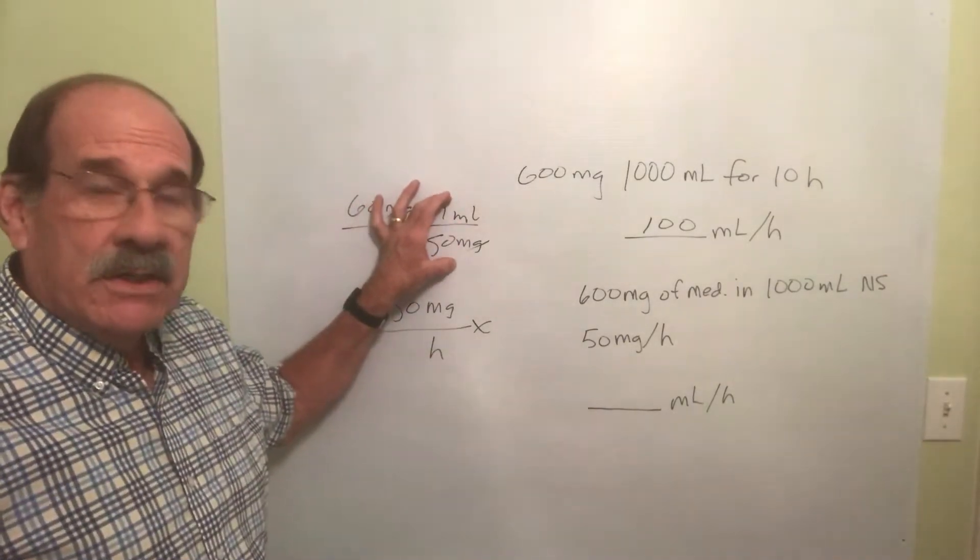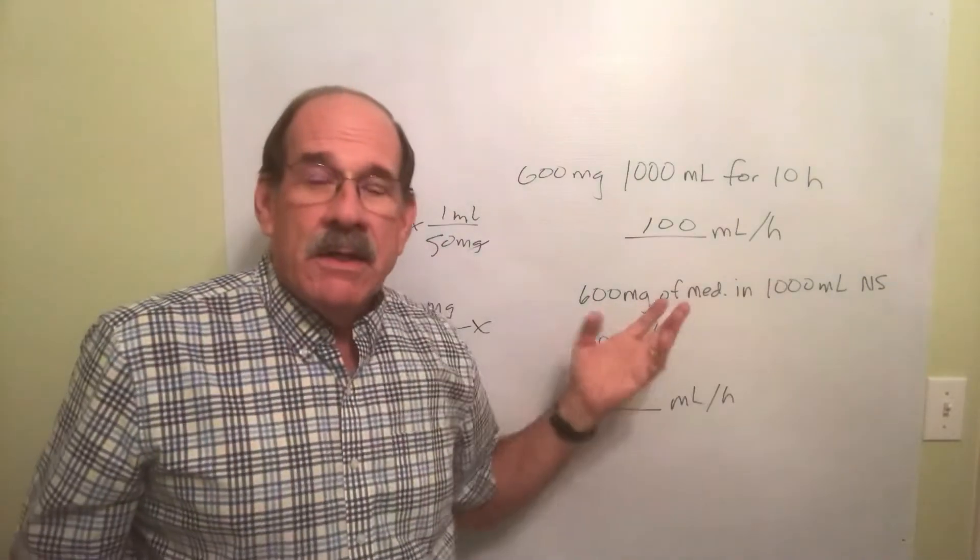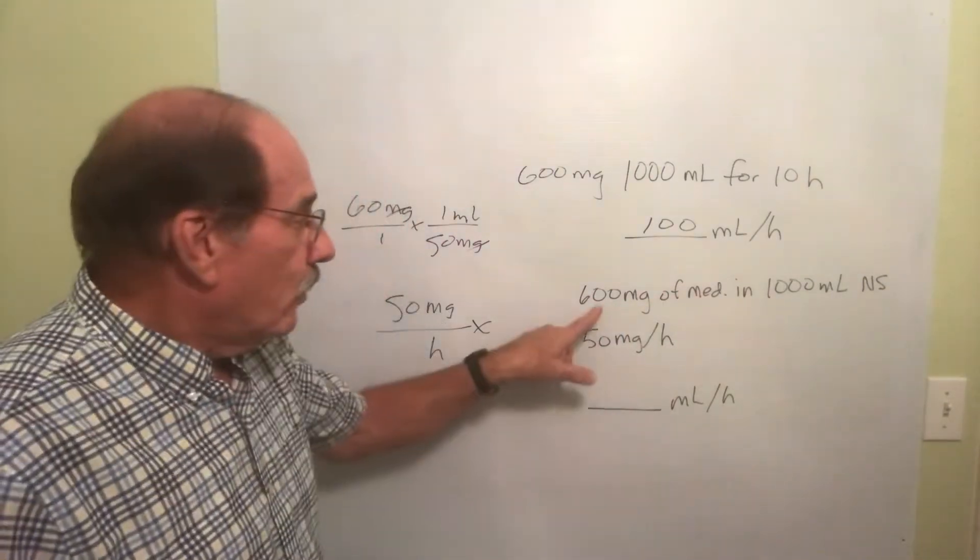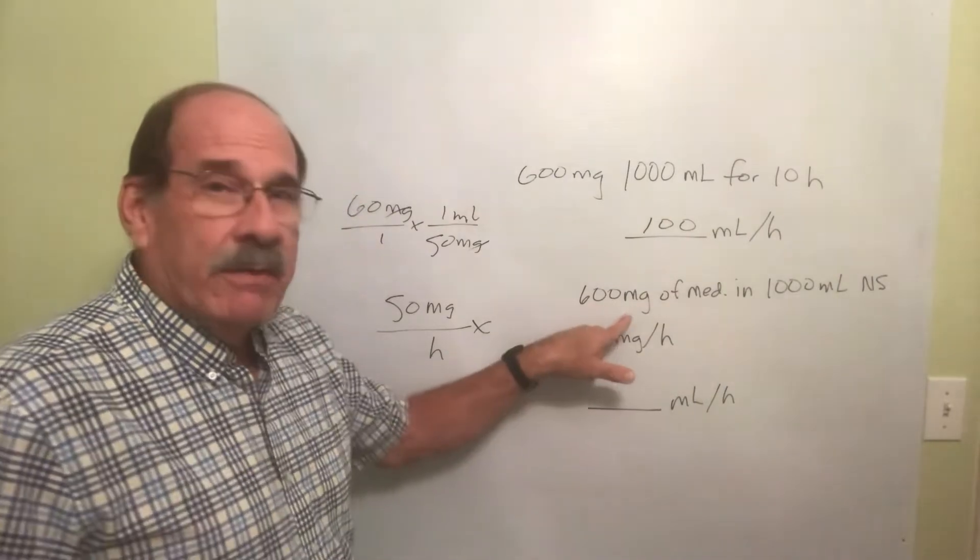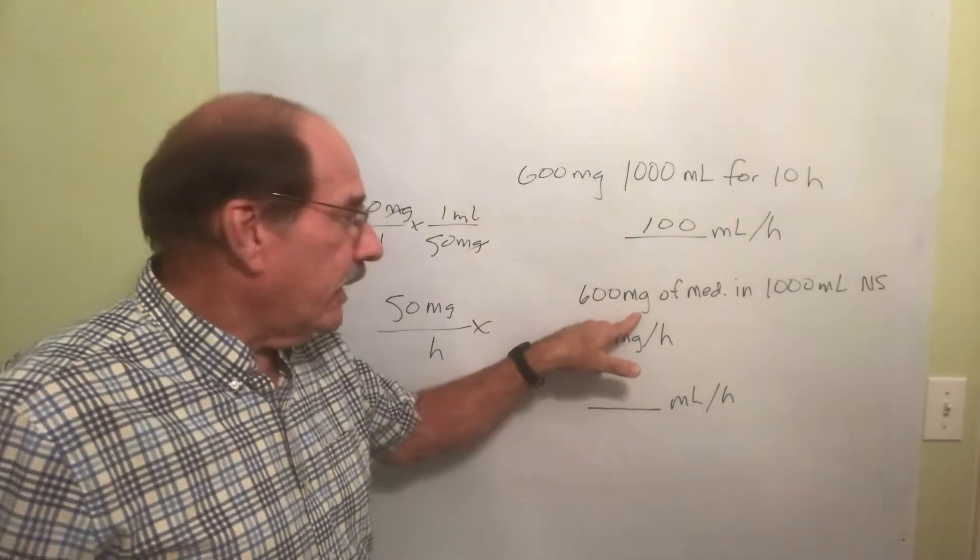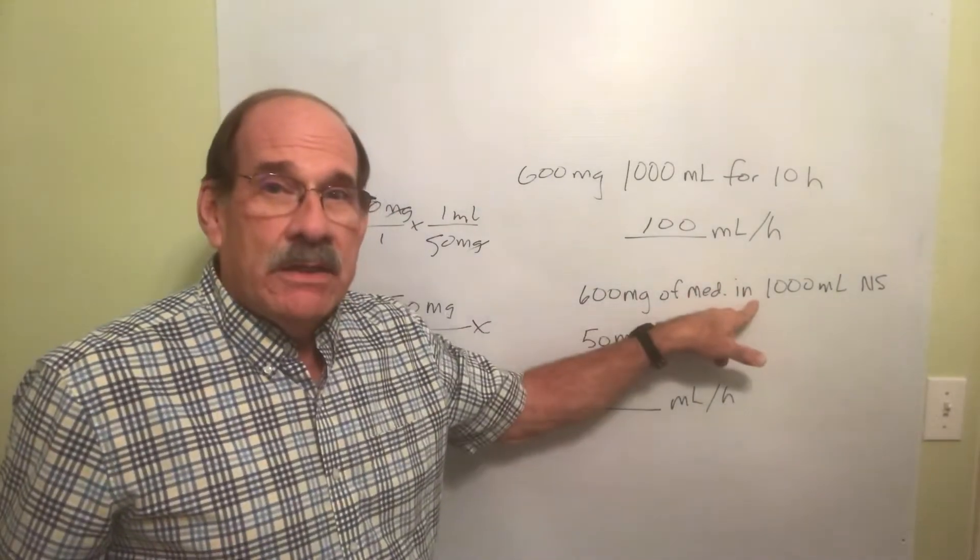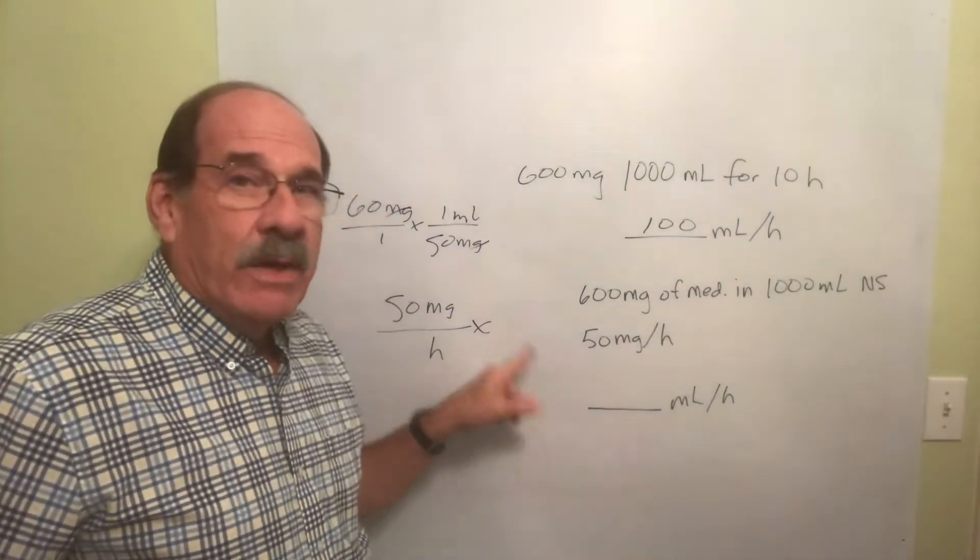We do the same thing here. How strong is our medicine? We have 600 milligrams, pardon me, 600 milligrams dissolved in 1000 milliliters. Write it that way but go backwards from bottom to top.